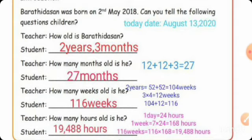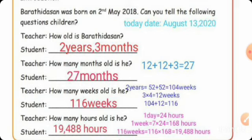How many weeks old is Baruthi? One year equals 52 weeks, so 2 years equals 104 weeks. One month equals approximately 4 weeks, so 3 months equals 12 weeks. Therefore 104 plus 12 equals 116 weeks old. How many hours old is he? One day equals 24 hours and 1 week equals 7 days, so 7 into 24 equals 168 hours per week. Therefore 116 weeks into 168 equals 19,488 hours. Baruthi was 19,488 hours old.